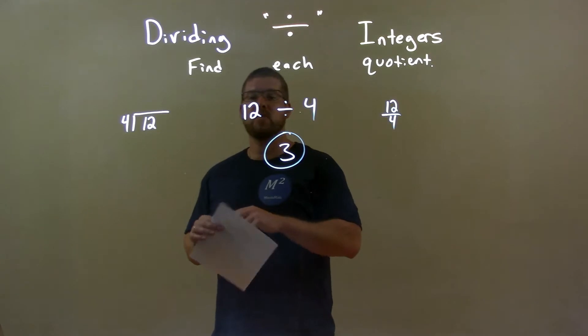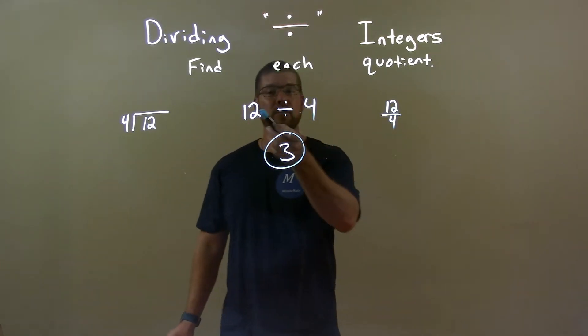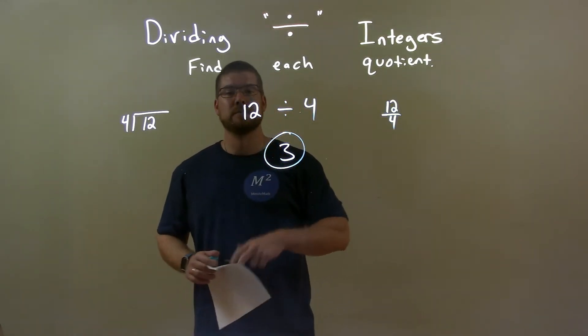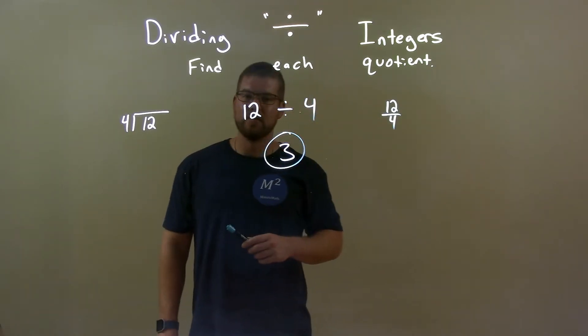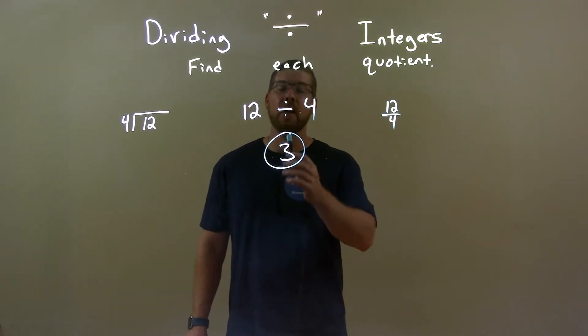A quick recap: we're given 12 divided by 4. We know 4 goes into 12 three times. A positive divided by a positive is still positive. Our final answer, quick and easy, is positive 3.